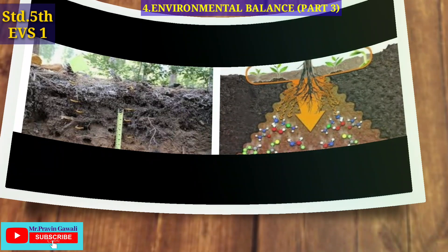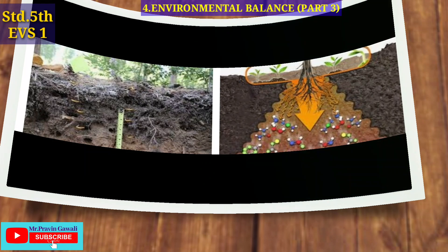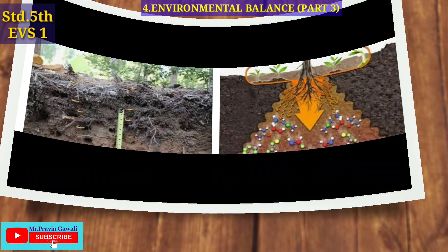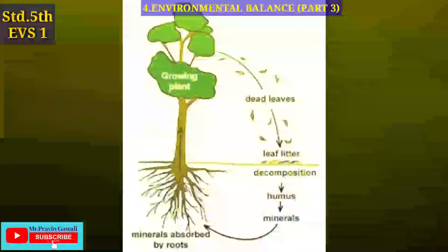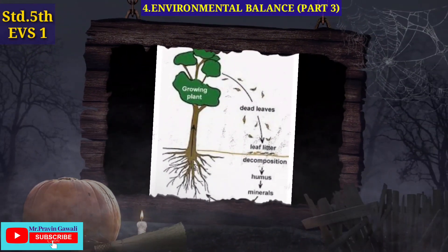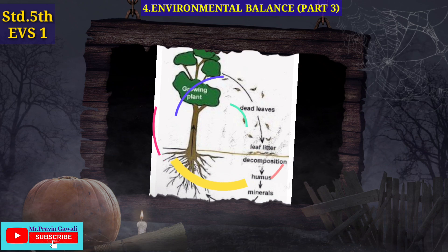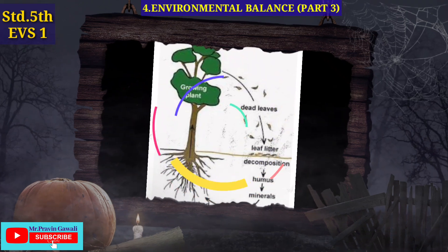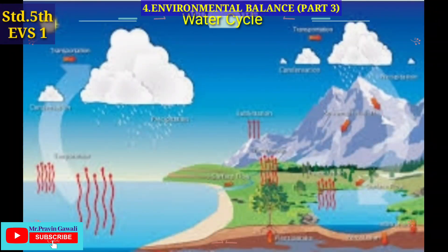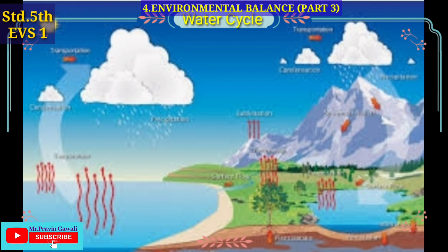Plants use substances in the soil for their growth, and when plants and animals die, the decomposition of their remains adds these substances to the soil once again. This is an important cycle in the environment.